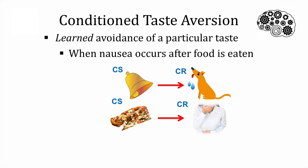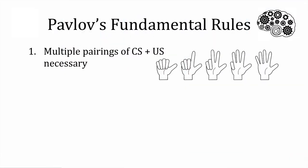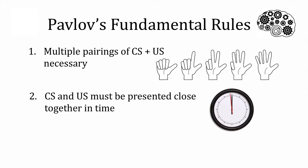Let's take a moment to review Pavlov's fundamental rules of classical conditioning. First, multiple pairings of the conditioned stimulus with the unconditioned stimulus are necessary in order for the conditioned stimulus to take on the association. Second, the conditioned stimulus and unconditioned stimulus must be presented together in time. These rules are based upon a mountain of laboratory research observed in meticulous experiments under tightly controlled lab conditions by Pavlov and others.